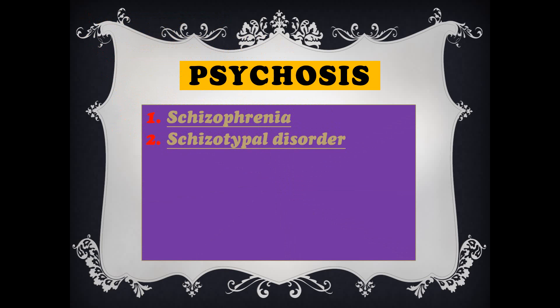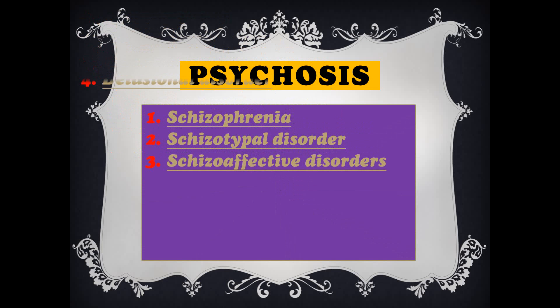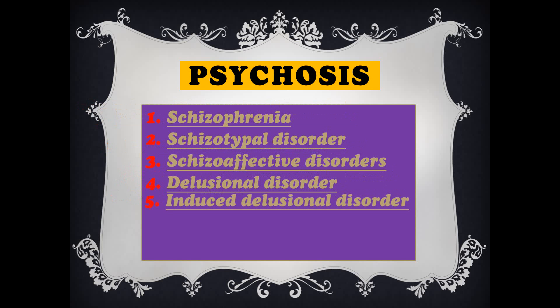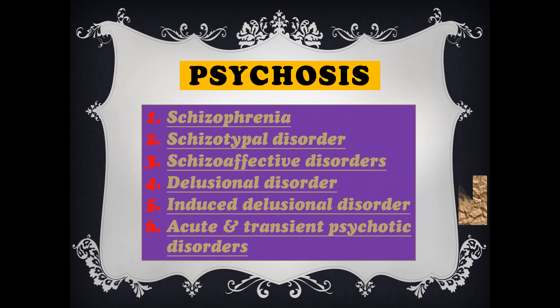Schizophrenia; schizotypal disorders, which look like schizophrenia; schizoaffective disorders, where there is schizophrenia as well as affective disorder including depression and mania; then delusional disorders, where there is delusion but not to the level of schizophrenia; induced delusional disorder; and finally acute and transient psychotic disorders.